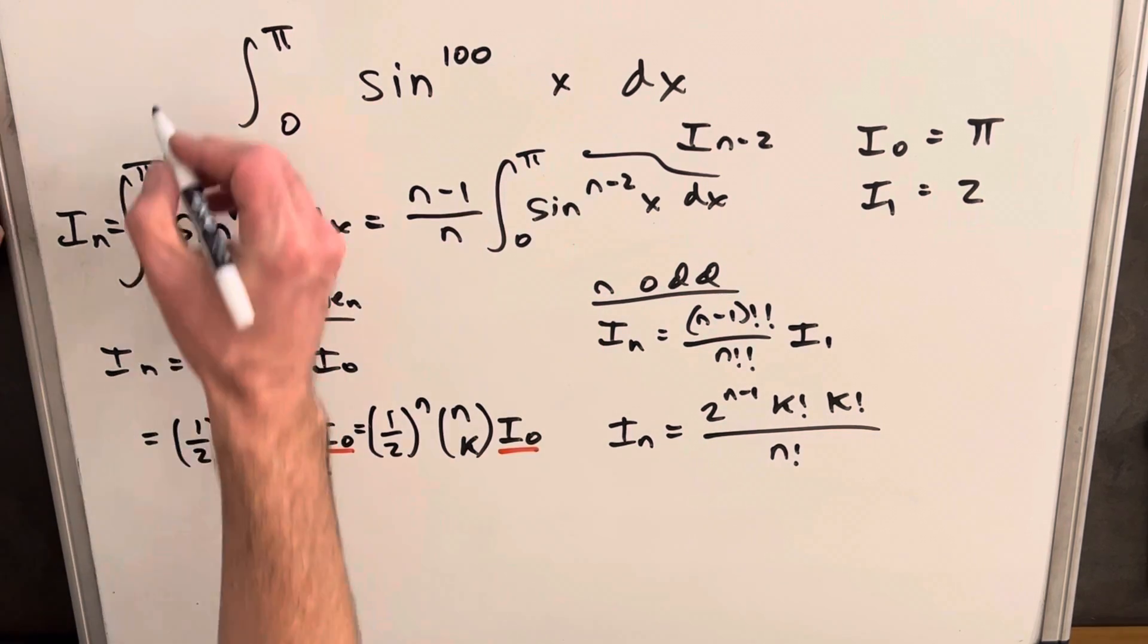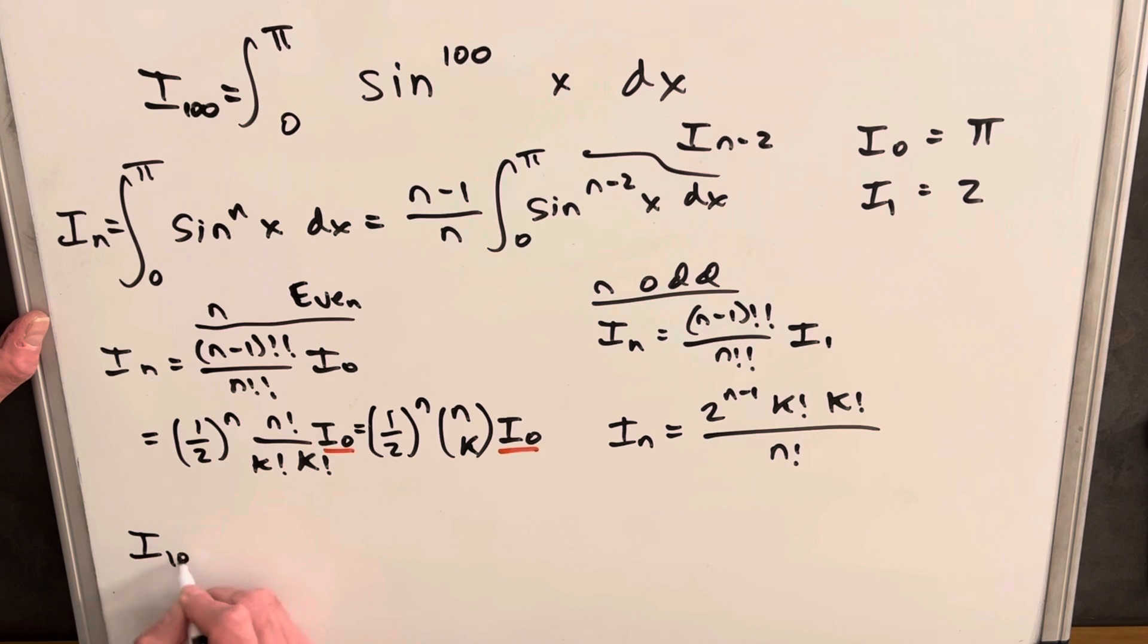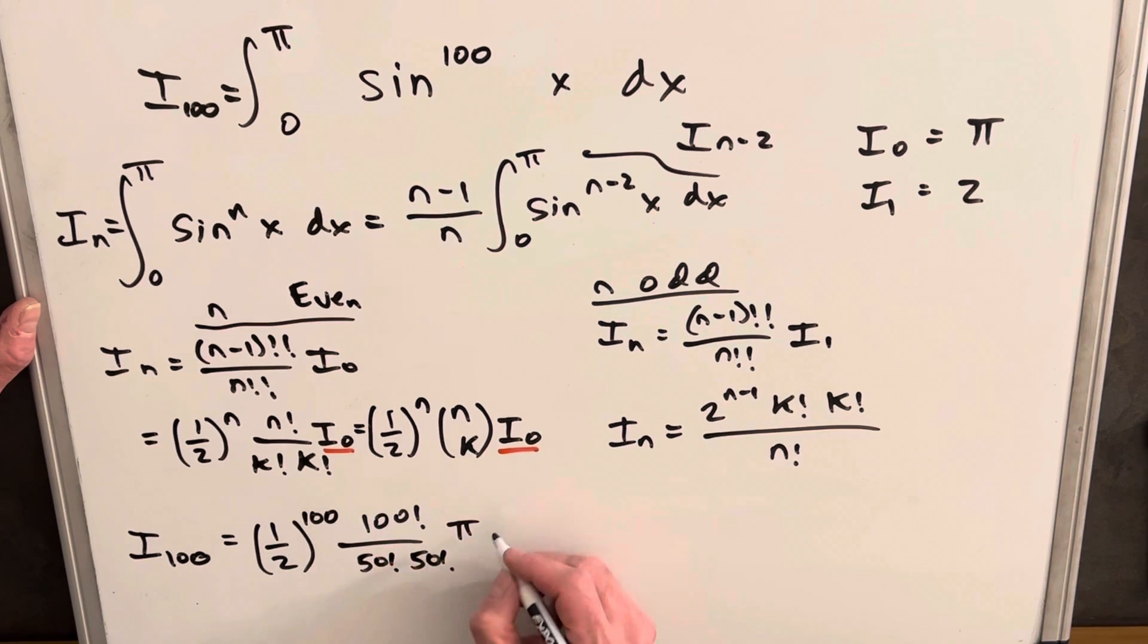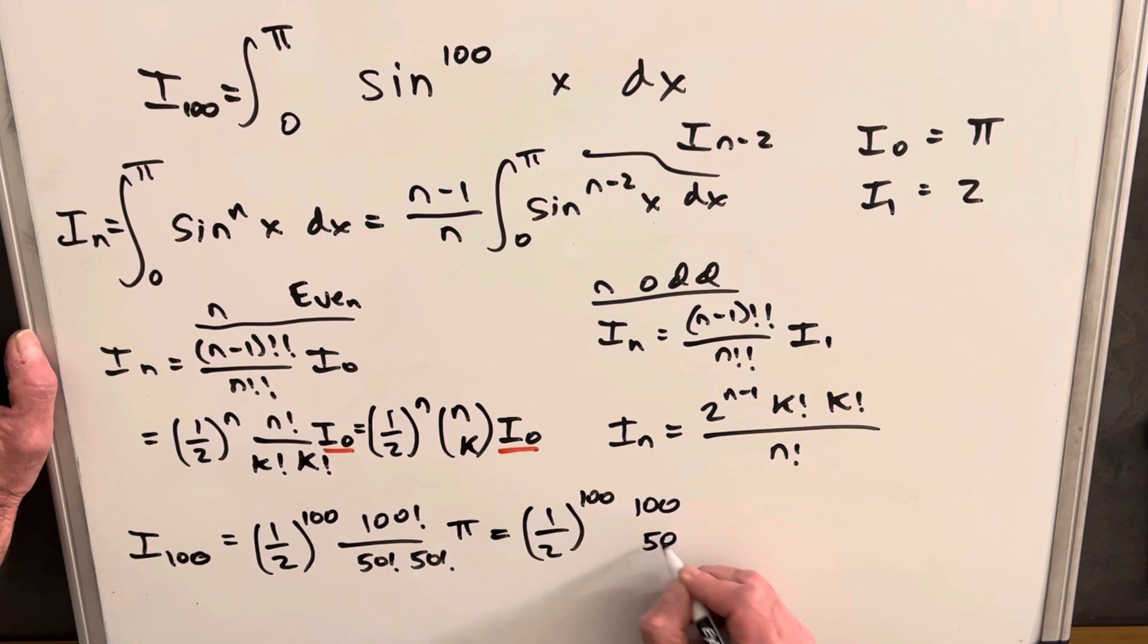So just wrap this up. Let's find the value of our integral. This thing is going to be our i sub 100. So we need to find what this is. Because 100 is even, we're going to use our even formula over here. So we can write this as 1 half to the 100. We'll use this notation. Either way, we can do 100 factorial over 50 factorial times 50 factorial. And i sub 0 is pi. And we'll do it this way as well. So I'll write it as 1 half to the 100, 100 choose 50 times pi. And that's it.